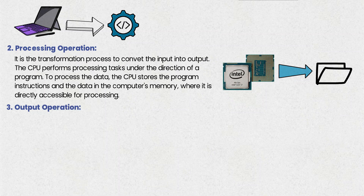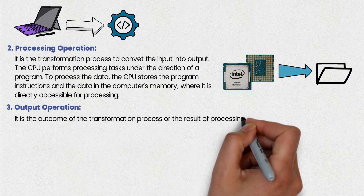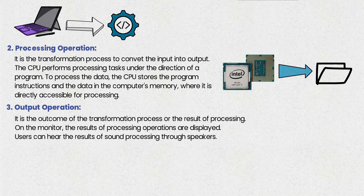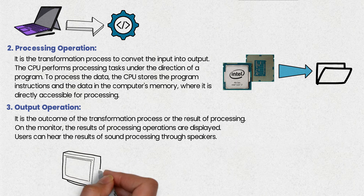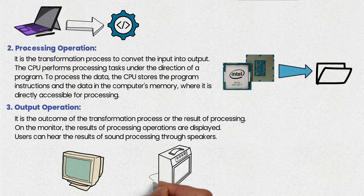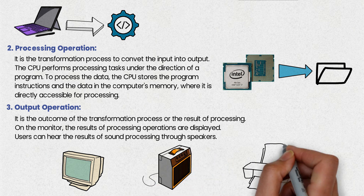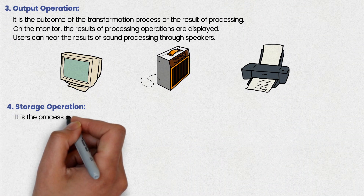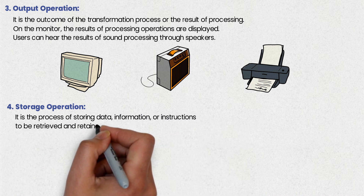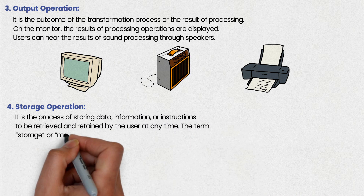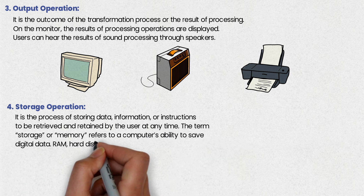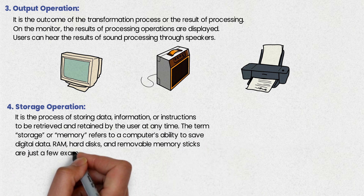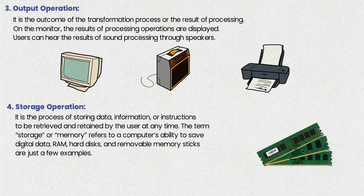Output operation is the result which comes from the transformation process, or the outcome of the processing. The monitor shows the results of processing operations on the screen. Speakers enable users to hear the results of sound processing, and the printer generates output on paper. Storage operation is the process of storing data, information, or instructions so that the user can retain and retrieve it whenever required. Computer data storage, referred to as storage or memory, can save digital data. Examples are RAM, hard disk, and removable memory sticks.